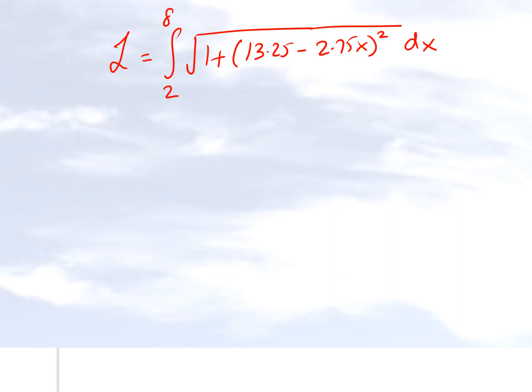This is from the previous slide. We can make a change of variables so that it looks like an integral of which we know the exact value. For example, let u equal 13.25 minus 2.75x, which is this quantity right here. That gives us du equals minus 2.75 dx.